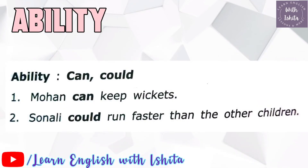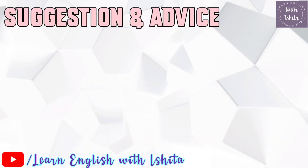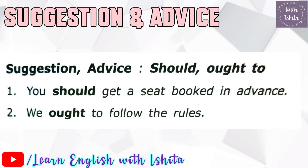'Could' and 'can' are used to talk about ability. For example: 'He could run faster than other children.' For suggestion or advice we use 'should' and 'ought to'. For example: 'You should get a seat booked in advance.' 'We ought to follow the rules.'